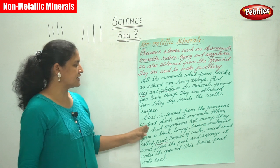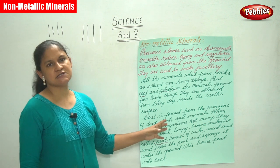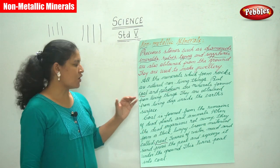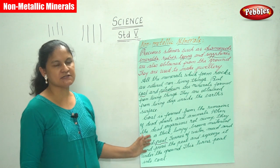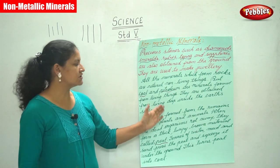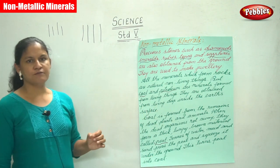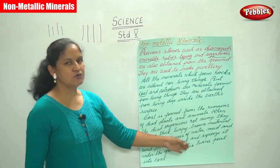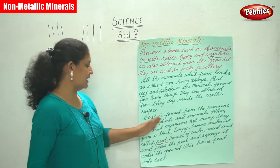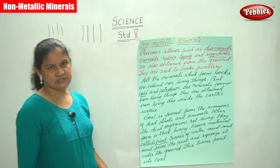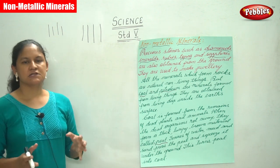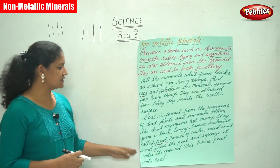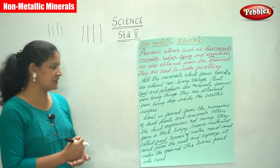So this is how coal is formed. Coal is formed from the remains of dead plants and animals. When these dead organisms rot away, they form a thick lumpy brown material called peat. Tons of water, mud, and sand press the peat and squeeze it under the ground, turning peat into coal.